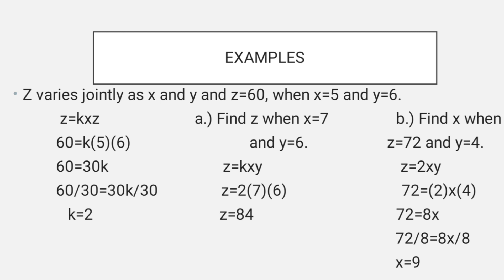Letter B: Find X when Z is 72 and Y is 4. We already found K equals 2, so substitute: 72 equals 2 times X times 4, which gives 72 equals 8X. Dividing each side by 8 gives X equals 9.